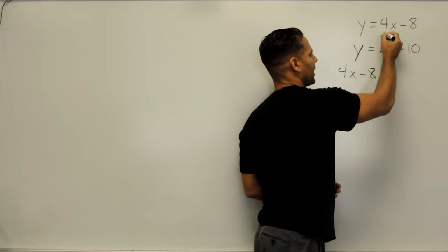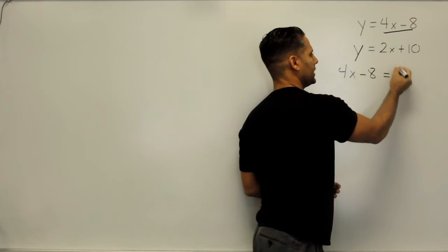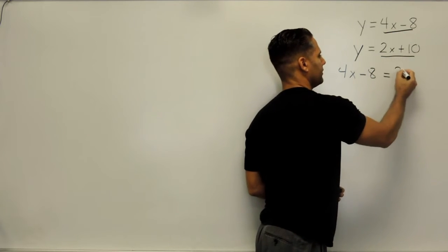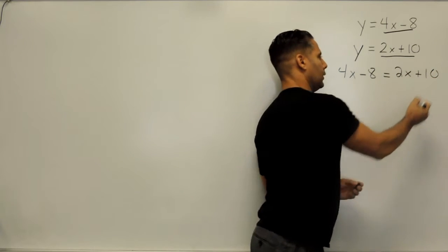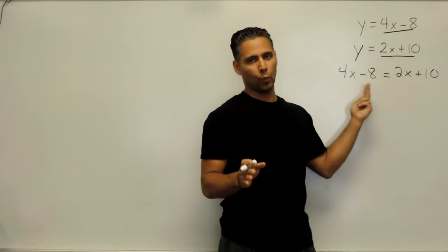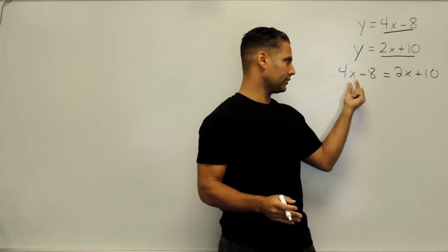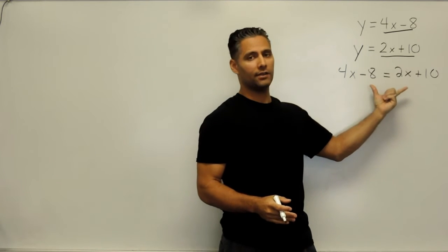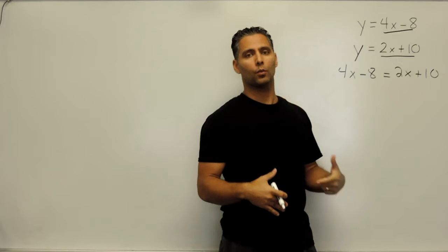So we take everything on this side of the equal sign, we're going to set it equal to everything on this side of the equal sign. And what this does is it gives us one variable, in this case it gives us the x value, and now we can isolate that x value to figure out what it is equal to.